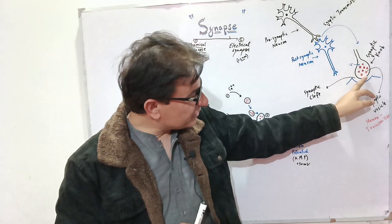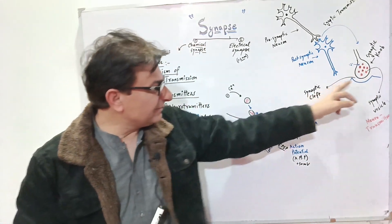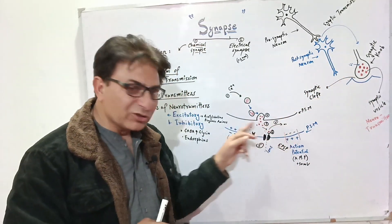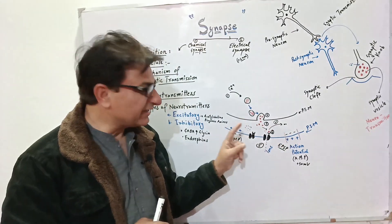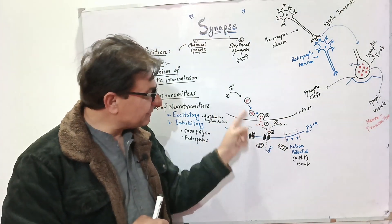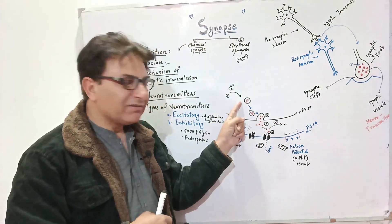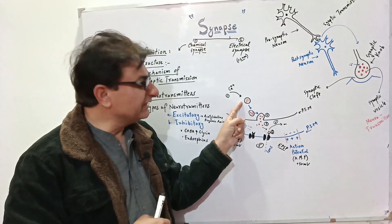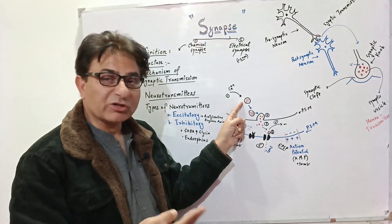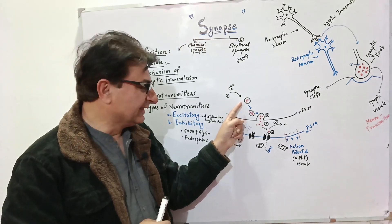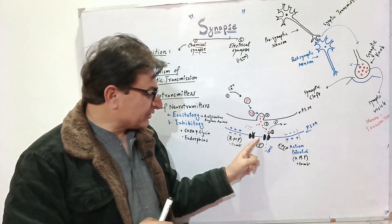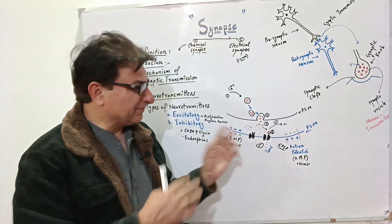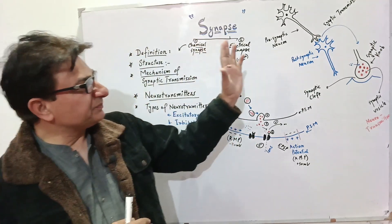If you enlarge the pre-synaptic and post-synaptic membranes further, you can see that before the pre-synaptic membrane, the synaptic vesicles are filled with neurotransmitters. The post-synaptic membrane has receptors on its surface.